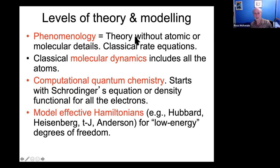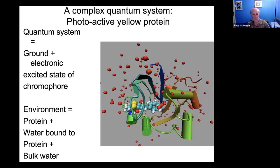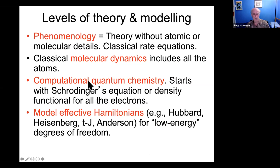There are different levels of modeling, and we actually need all of them. Theory without atomic and molecular details — like classical rate equations — can explain some things. Classical molecular dynamics includes all atoms but doesn't allow for quantum effects. Computational quantum chemistry starts with Schrödinger's equation or a density functional for the electrons. But what I'll be talking about is something different, common in condensed matter physics — my background — which is model effective Hamiltonians: famous ones include the Hubbard model, Heisenberg model, and Anderson model. These describe only the low-energy degrees of freedom.